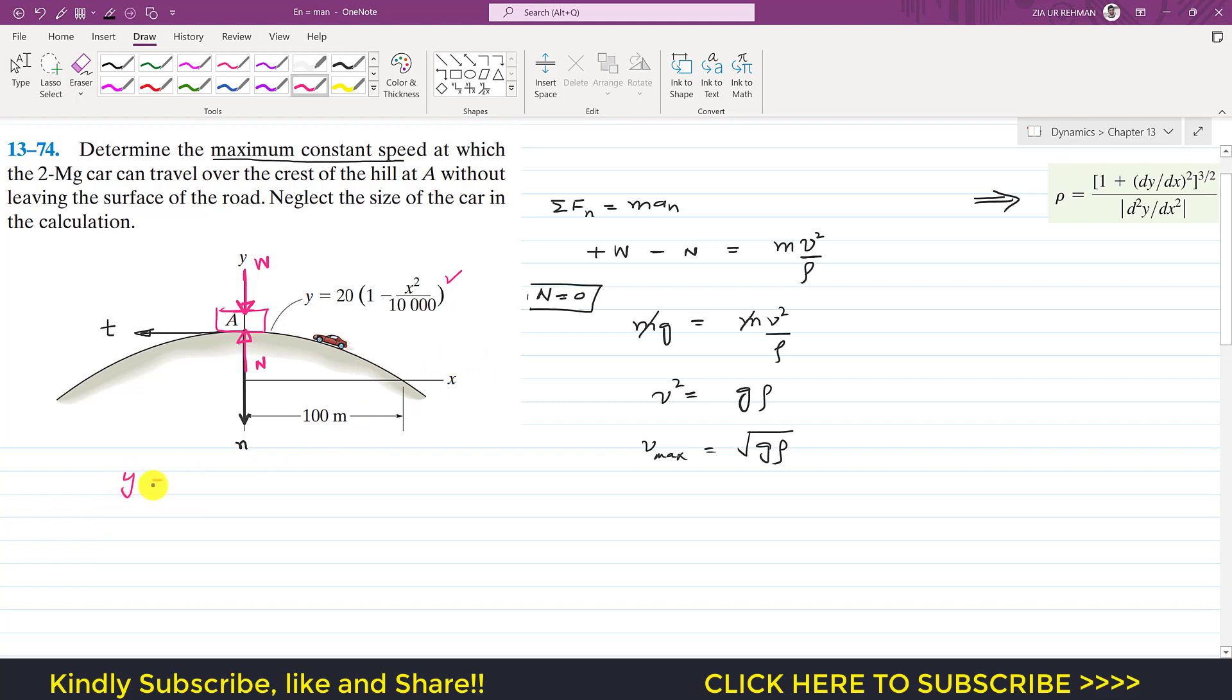So we can write that y equals to 20 into 1 minus x squared divided by 10,000. So if I take the derivative, so this is dy by dx. So 20 and the derivative of this one will become 0 and this will become minus 2x divided by 10,000. And if we take one another derivative, so this will be d squared y by dx squared.